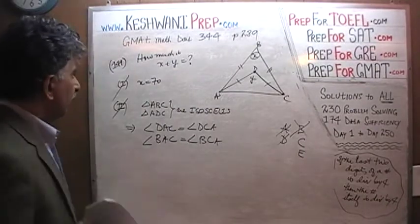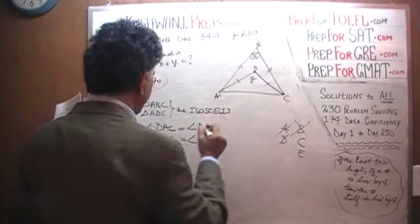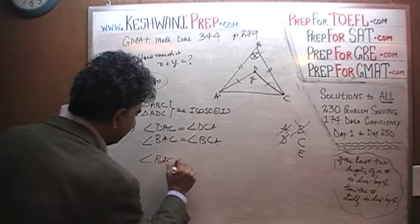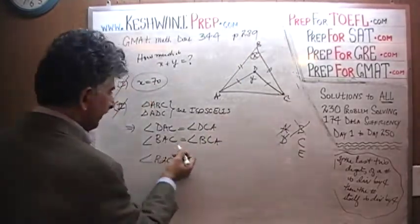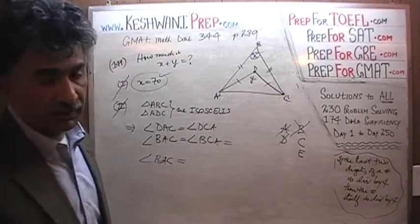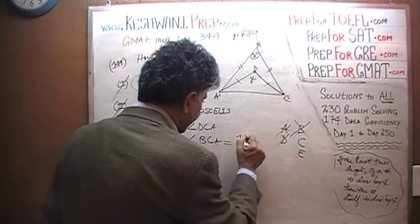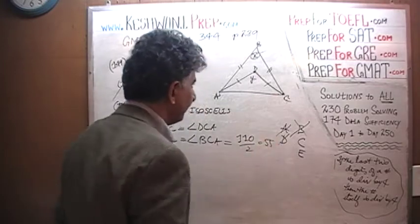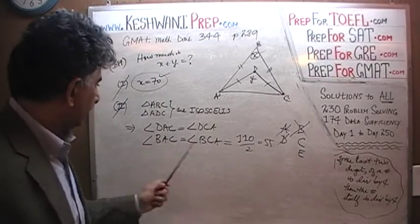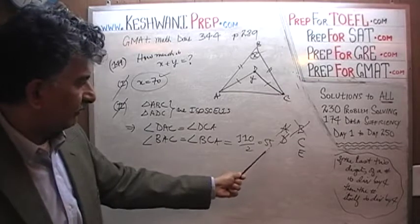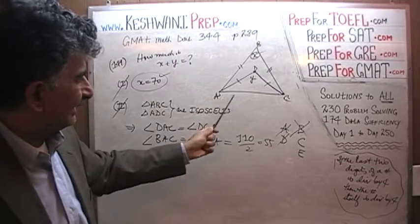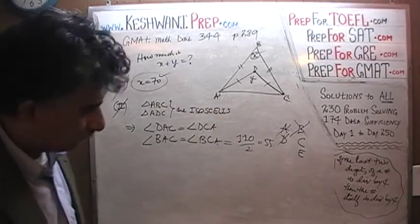Now we know x is 70. If x is 70, then angle BAC has to equal angle BCA. Since this angle is 70, those two must add up to 110, which means each one is 110 divided by 2, which is 55 degrees. So now we know angle BAC is 55 degrees. But we still have to know angle BAD or DAC in order to figure out y, and we do not know that.